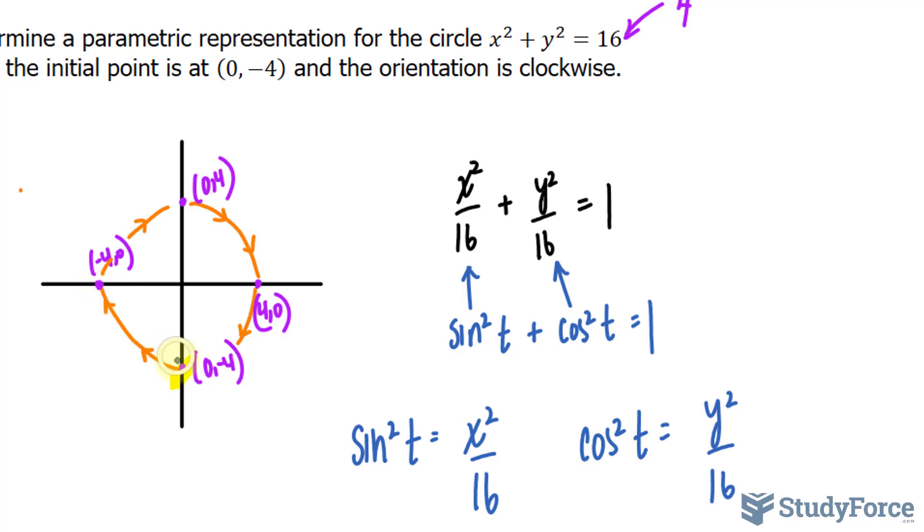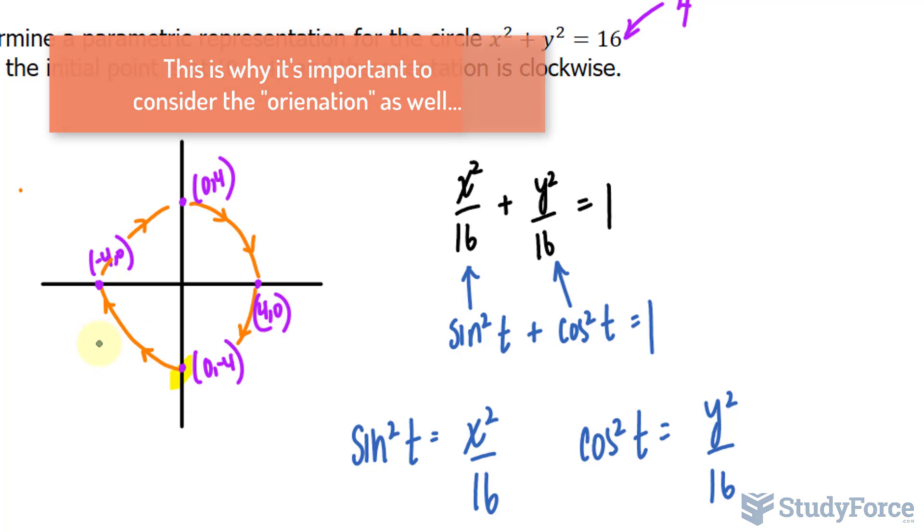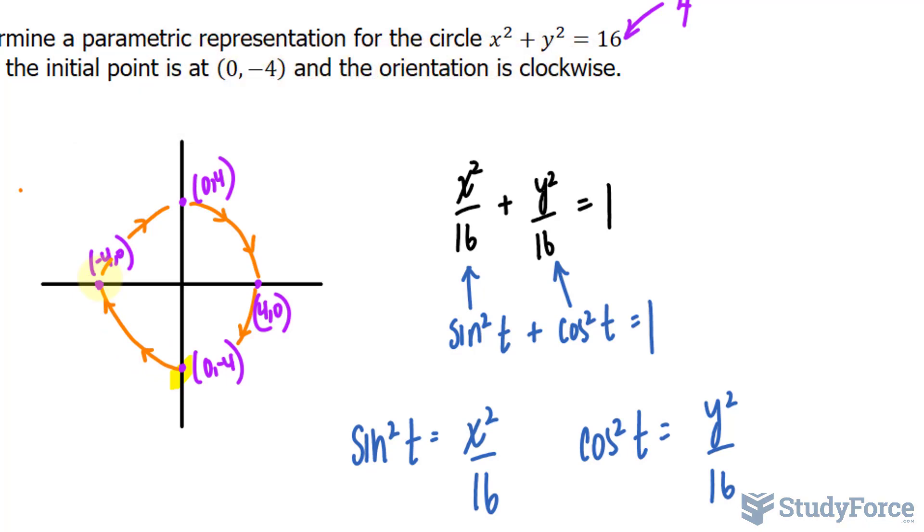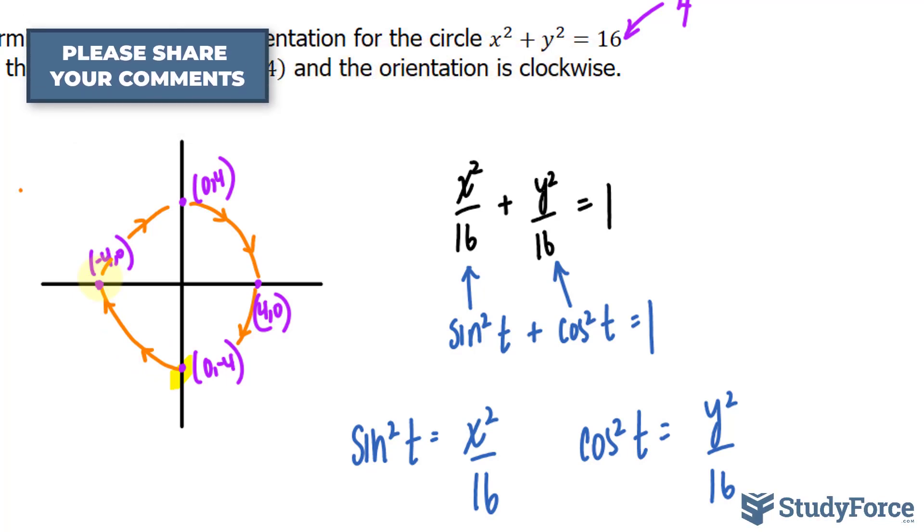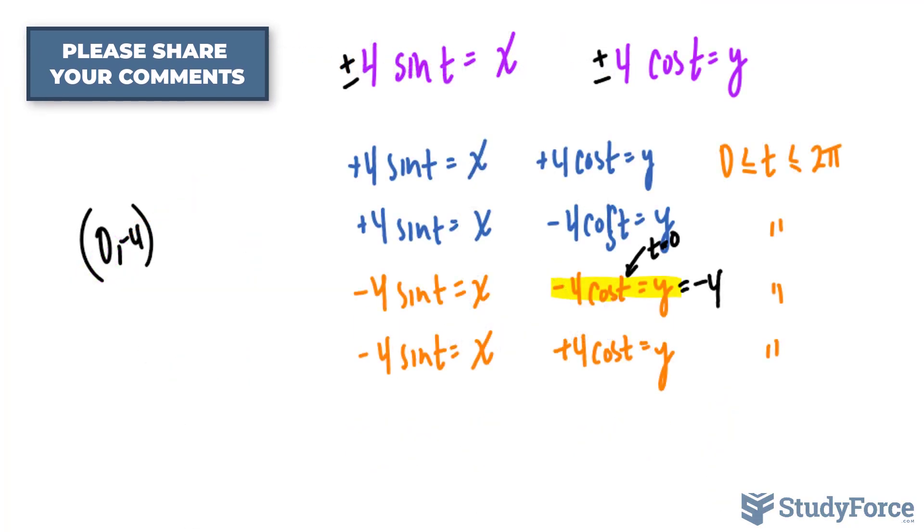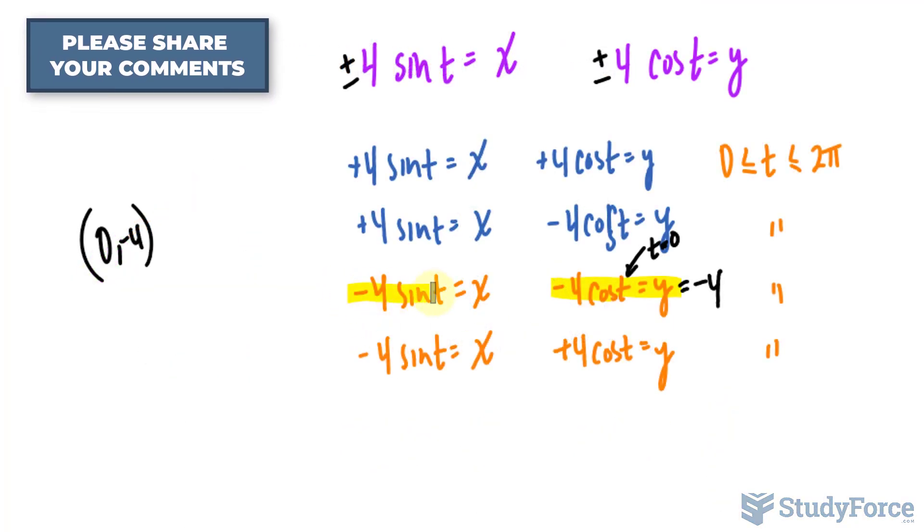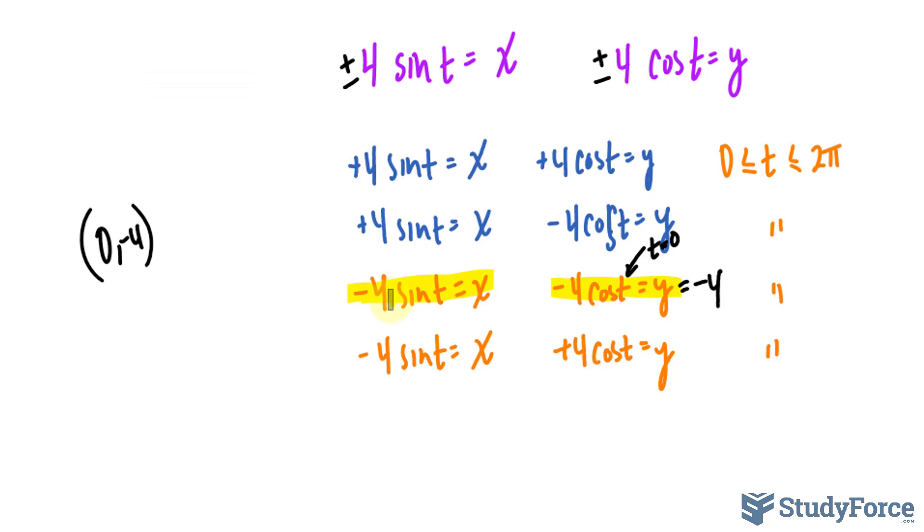And what that is suggesting is that the x values are becoming more negative. You see, it went from 0 to negative. Therefore, we must choose x is equal to negative 4 sine t as the parametric equation describing the x. I'll highlight the fact that we have to choose negative 4 sine t because of the orientation. Our two parametric equations have to be the negative versions, which are those that are highlighted.